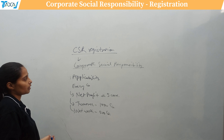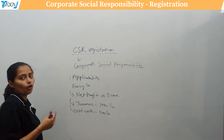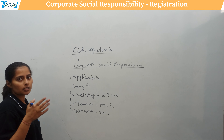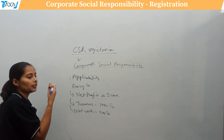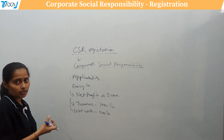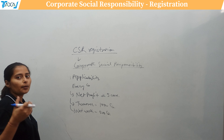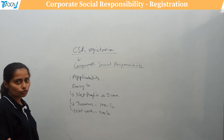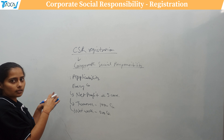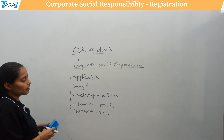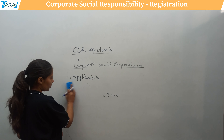A separate CSR committee is formed when CSR becomes applicable. As discussed, a company can fulfill its CSR obligation either through its own registered trust or Section 8 company, or by approaching another NGO. Now let's discuss through which types of establishments CSR activities can be undertaken.